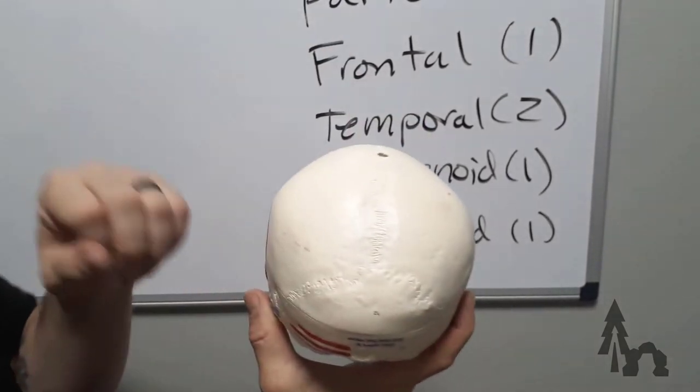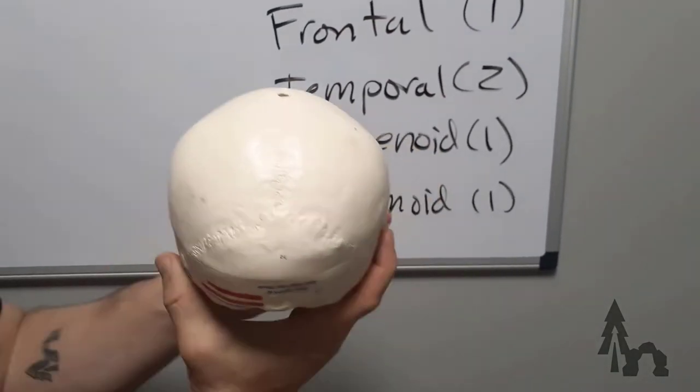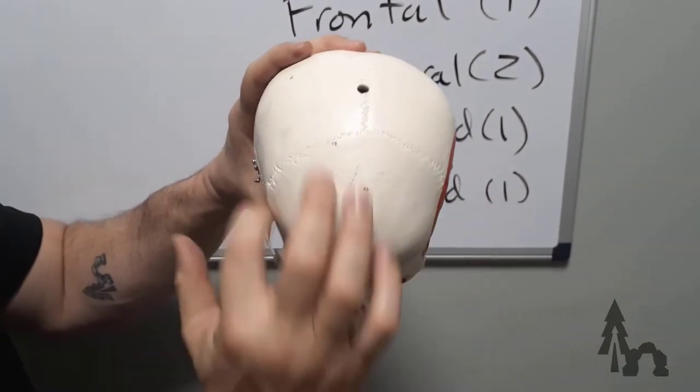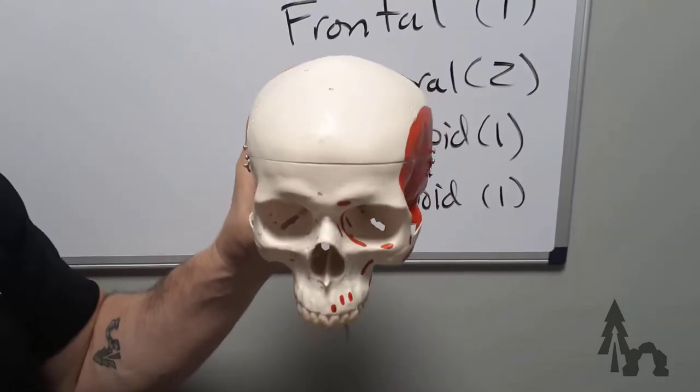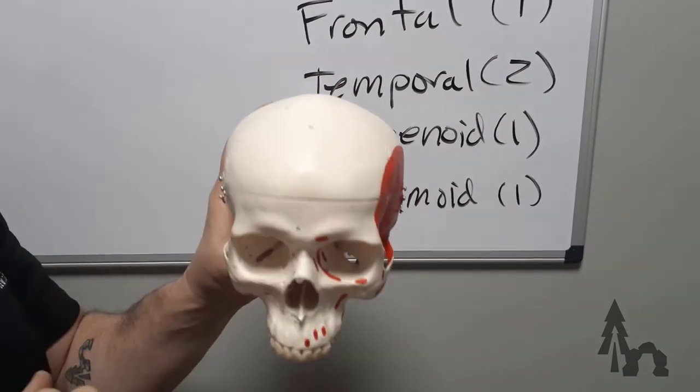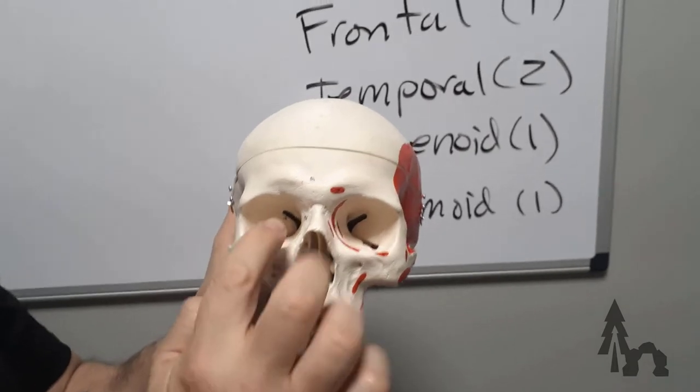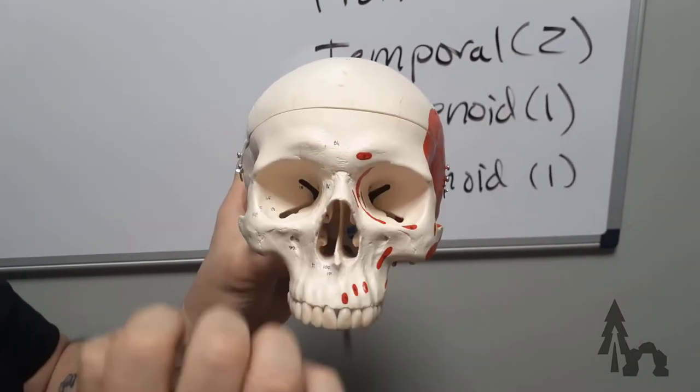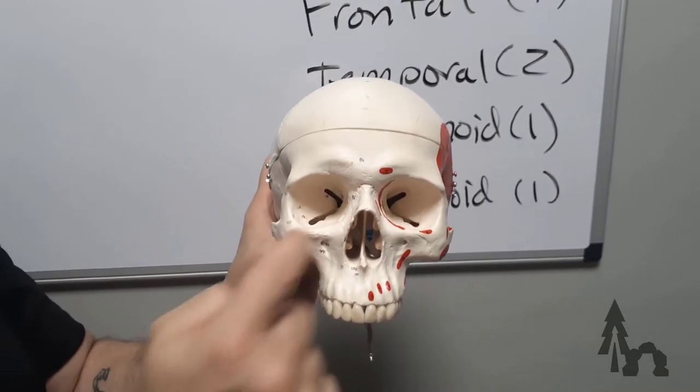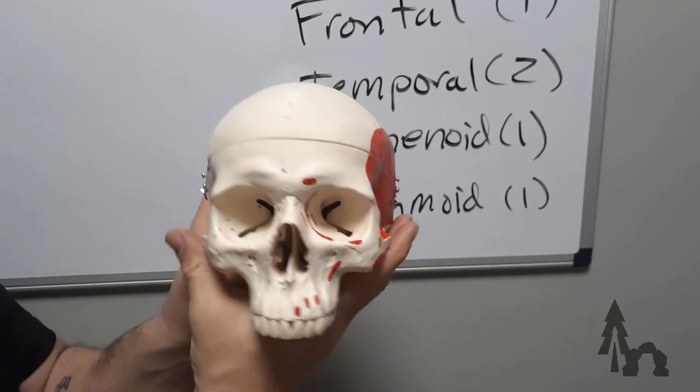The two parietal bones are going to form the lateral or side wall of your skull. In the front, the two parietal bones are going to articulate with the frontal bone, which is your forehead basically. So you can feel that. This is the squamous or flat portion of the frontal bone. The frontal bone has this little area between your eyebrows called the glabella, that flat spot. And then those two ridges that form your eyebrows. These are called the supraorbital, meaning above the eye socket, supraorbital margins, or supraorbital ridge.